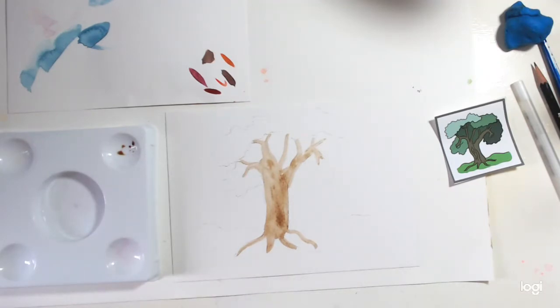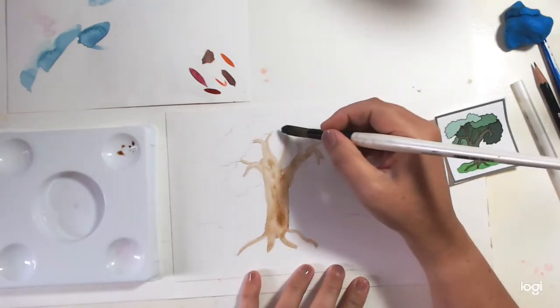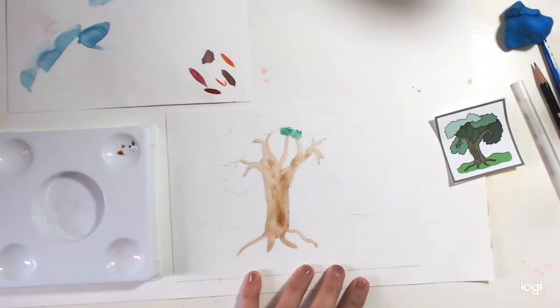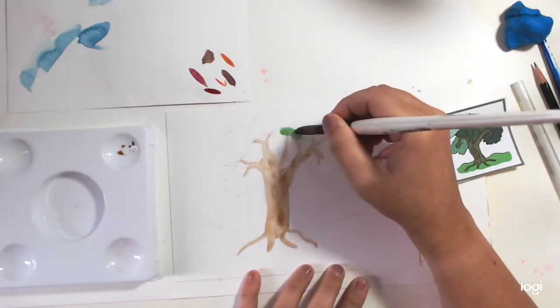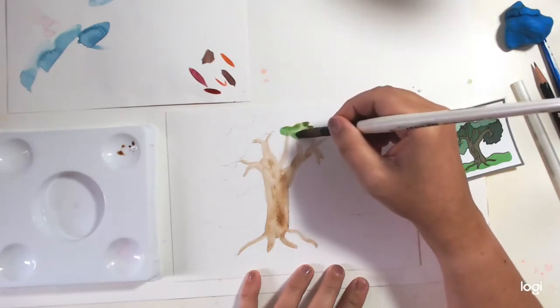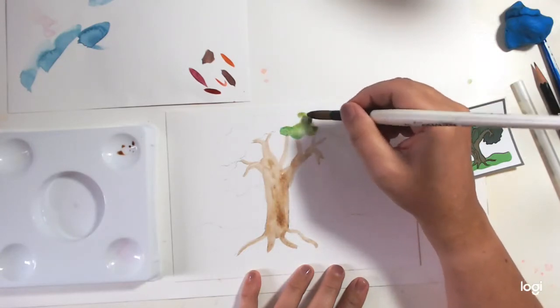I'm going in now with some green straight from my block of watercolors. You can get them in tubes or watercolor pencils. Do I like that green? Not so much, so let's try a different green. That's what I like about watercolors—as long as you change it quickly, it's really easy to do.